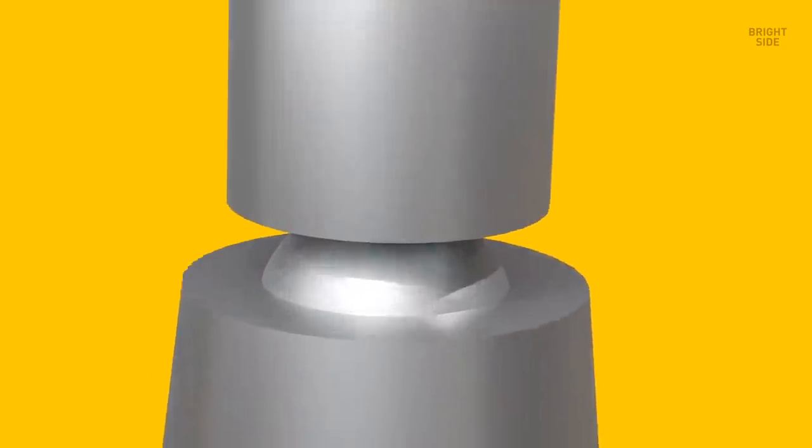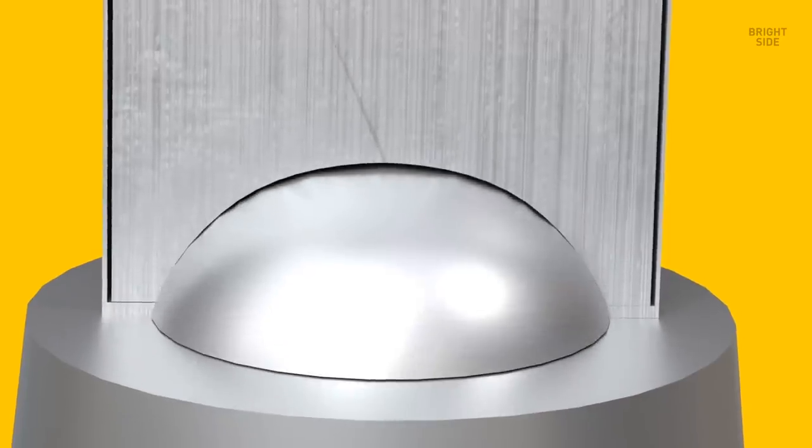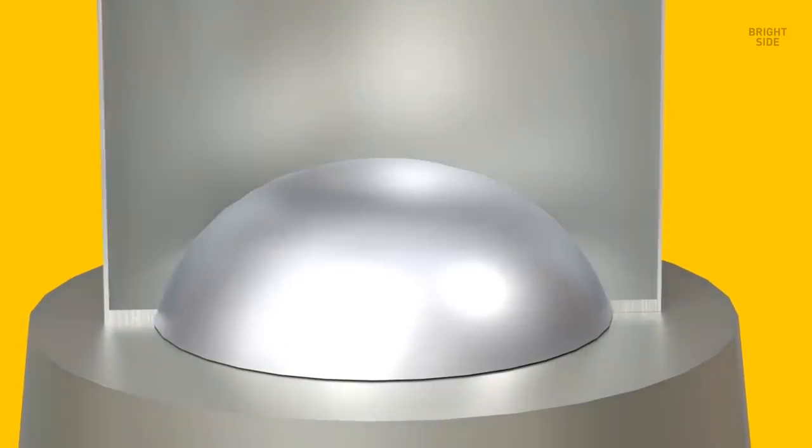Another punch pushes the cup through the ironing ring, and its walls become thinner and taller. Next, you need to make a dome at the bottom of the cup. The punch pushes the cup into a doming tool. The punch itself has a matching concave indentation. So when pressed, the cup's bottom gets deformed into a dome.